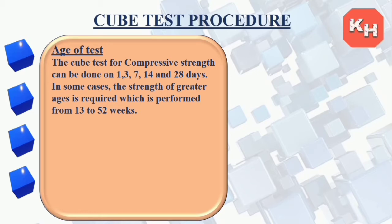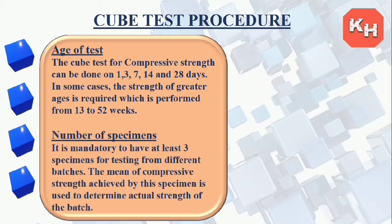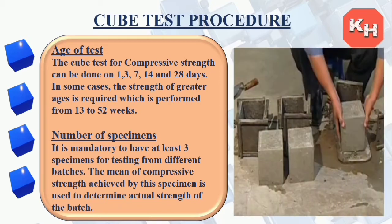The cube test for compressive strength can be done at 1, 3, 7, 14, and 28 days. In some cases, greater ages are required, performed from 13 to 52 weeks. It is mandated to have at least three specimens for each testing interval. The mean compressive strength achieved by these specimens is used to determine the actual strength of the batch. The cube molds are cast and then removed after setting.